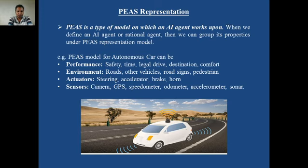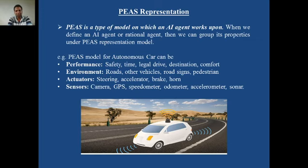In case of this autonomous car, performance can be safety — the passenger always requires safety. The passenger also requires that we should reach the destination in time, that the car should not move in an illegal lane, that the car should reach the destination, and that there must be comfort during travel. These could be the performance measures for this autonomous car agent.